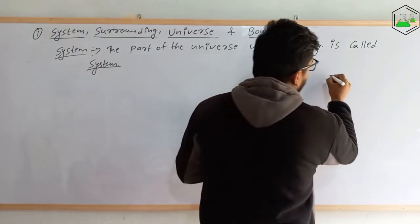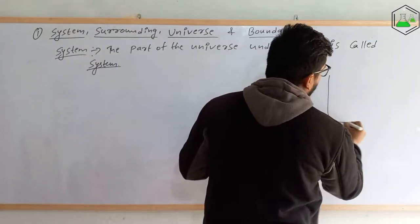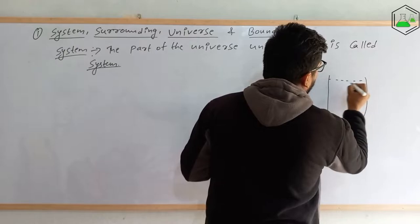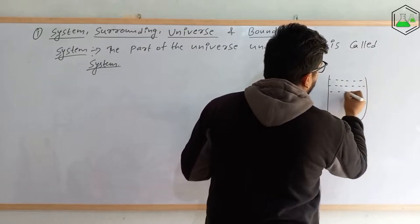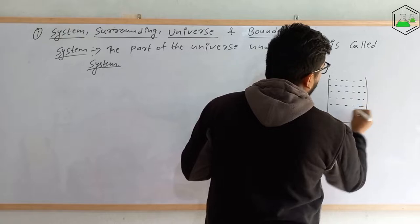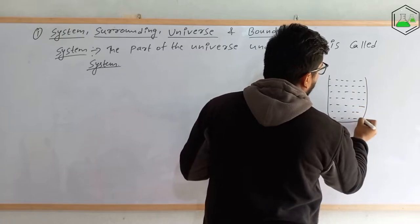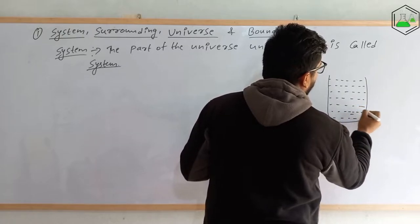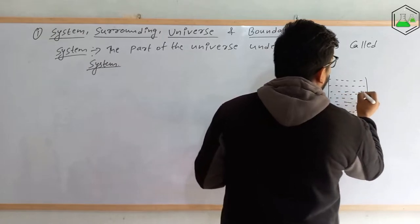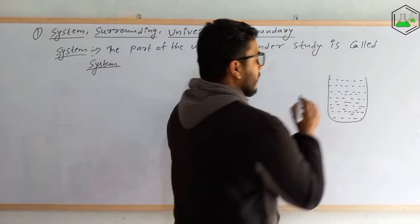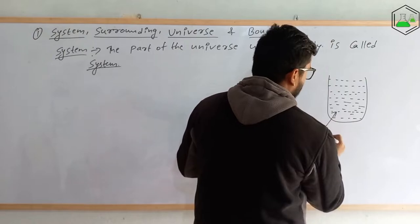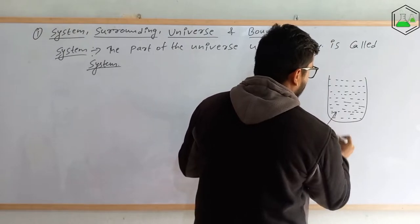Let us understand this by a figure. Suppose we have a beaker — anything inside it is called the system. If a chemical reaction is happening inside there, then this is the system.